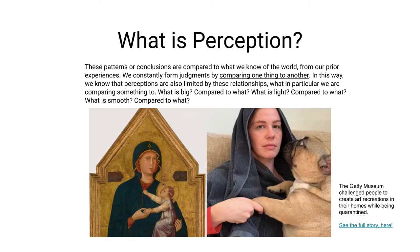These patterns or conclusions that we draw are compared to what we start out by knowing about the world from our prior experiences. As we go about our daily lives, we're constantly forming judgments by comparing one thing to another — the things that we see in the world. In this way, we know that perceptions are also limited by these relationships, particularly when we're comparing one thing to another.